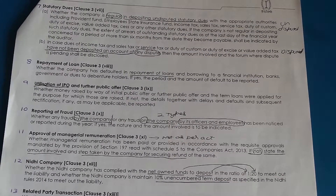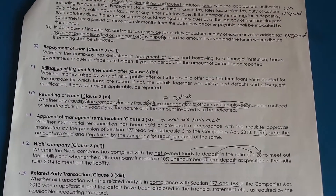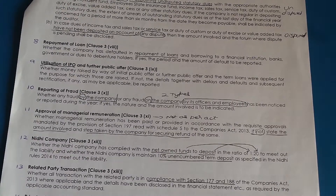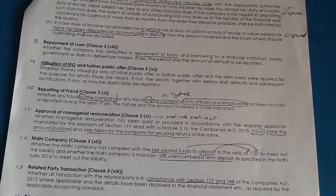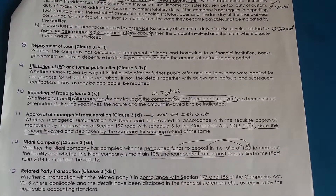Clause 11 deals with approval of managerial remuneration, and is applicable mainly to public companies. As per section 197 and schedule 5 of the Companies Act, certain limits are placed on managerial remuneration. The auditor will report whether the remuneration paid is within those limits, or if it exceeds the limits, whether necessary approvals have been obtained.